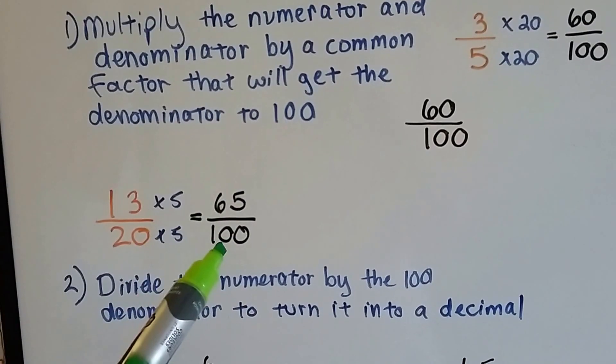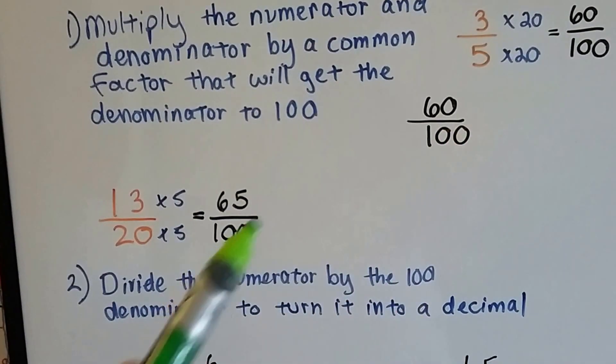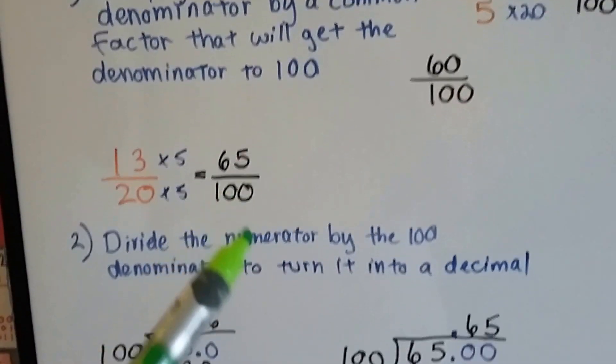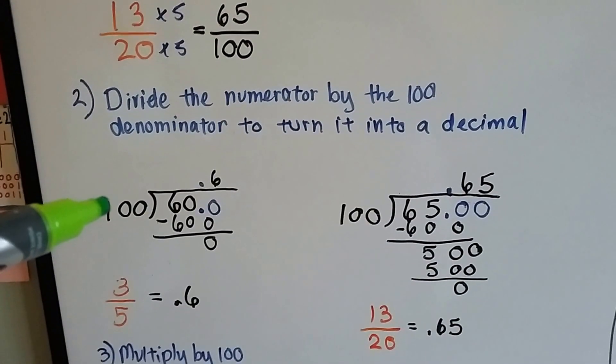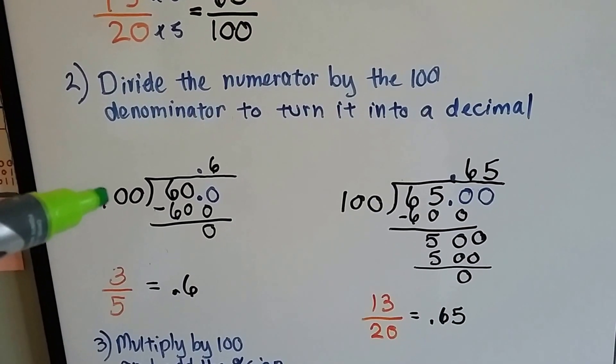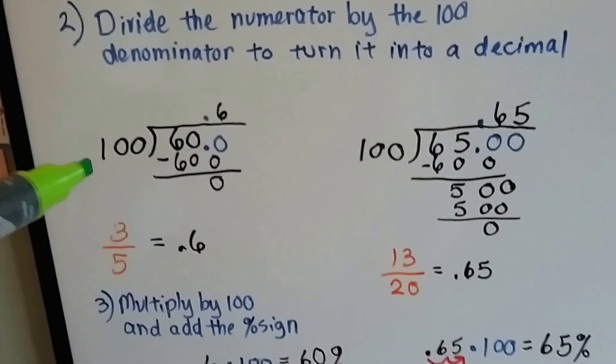Now we have 65 hundredths. These can be turned into percents now. Here's what we do. We divide the numerator by the 100 denominator as the divisor and we turn it into a decimal.